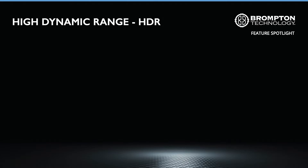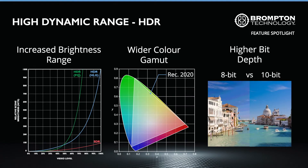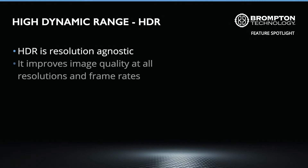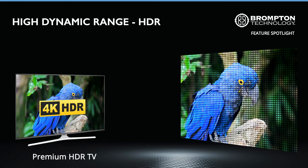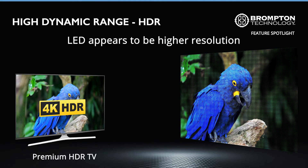In summary, HDR consists primarily of three image quality improvements: an increased brightness range, wider colour gamut, and higher bit depth. This creates an image that is sharper, more detailed and perceived by our eyes as more vivid and lifelike. Interestingly, a unique property of HDR is that it is resolution agnostic, meaning it will improve image quality at all resolutions and frame rates. Even a lower resolution screen with good quality LEDs capable of meeting the brightness and colour requirements of HDR content will show a dramatic improvement, and even appear to be of a higher resolution.